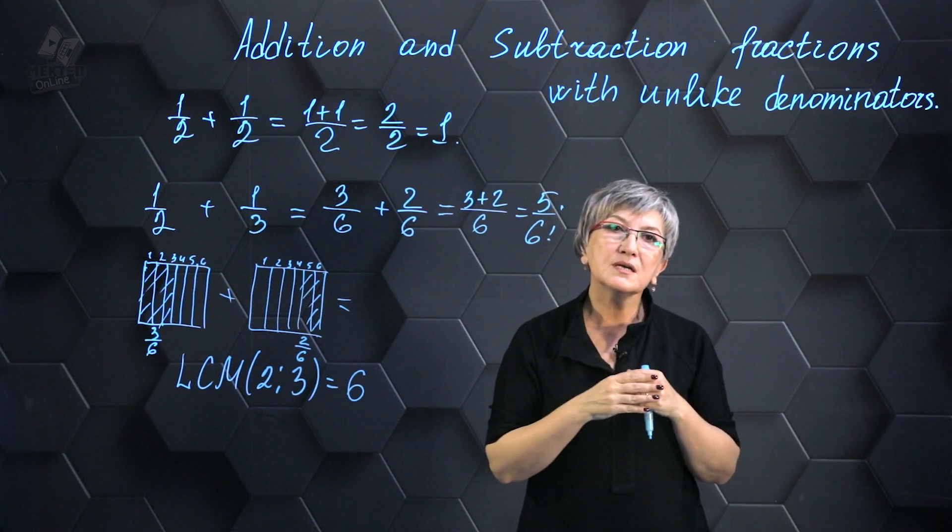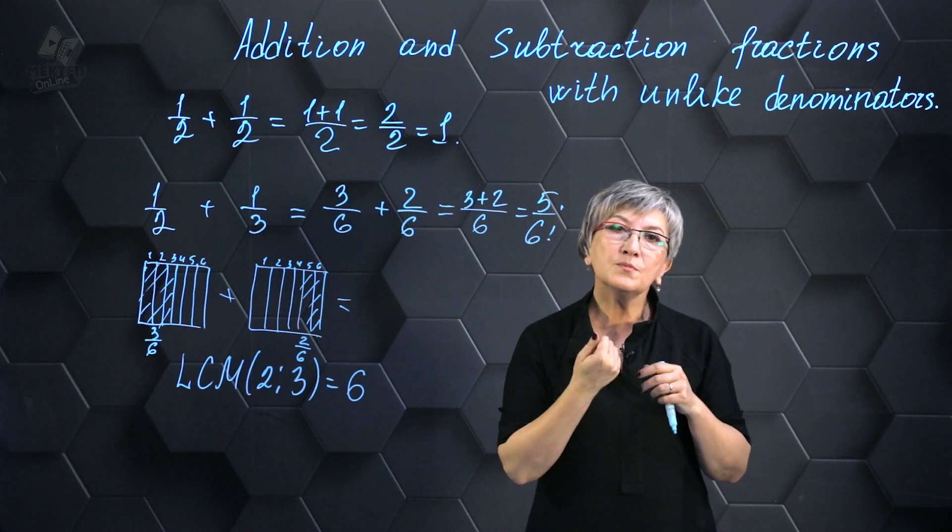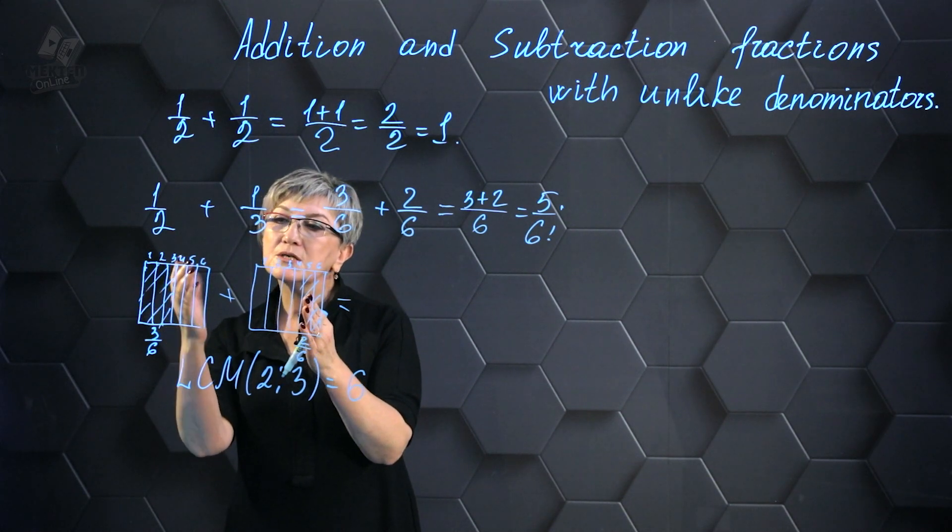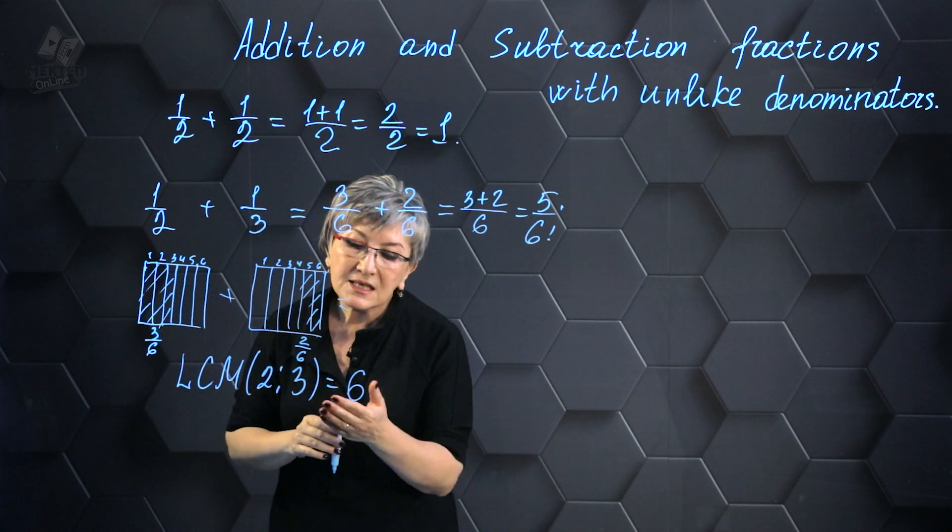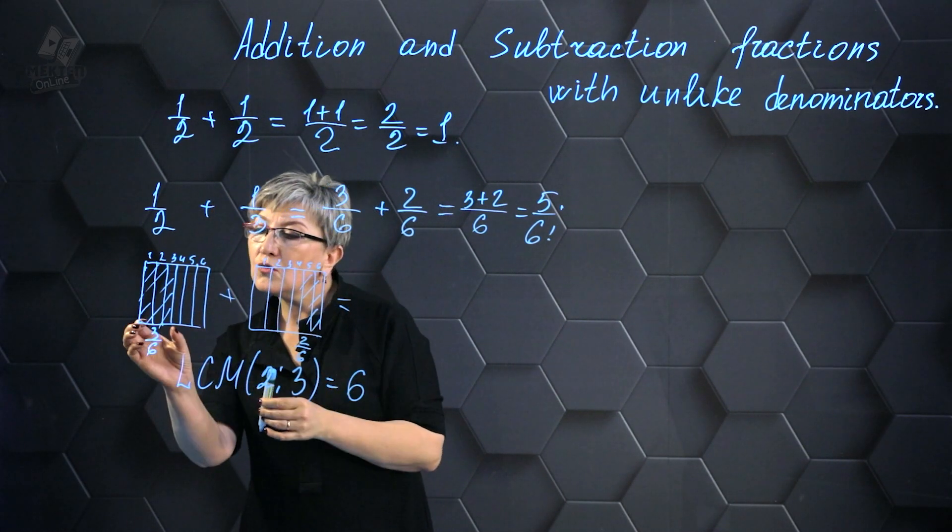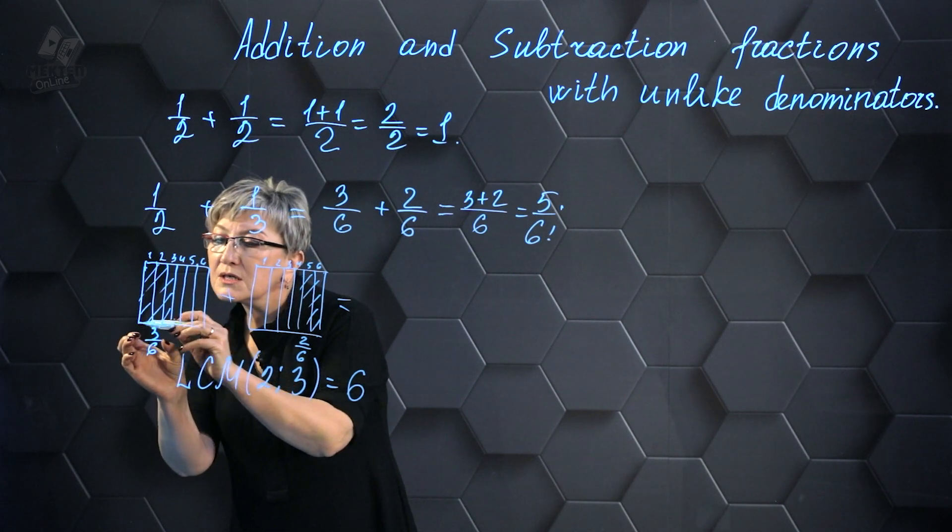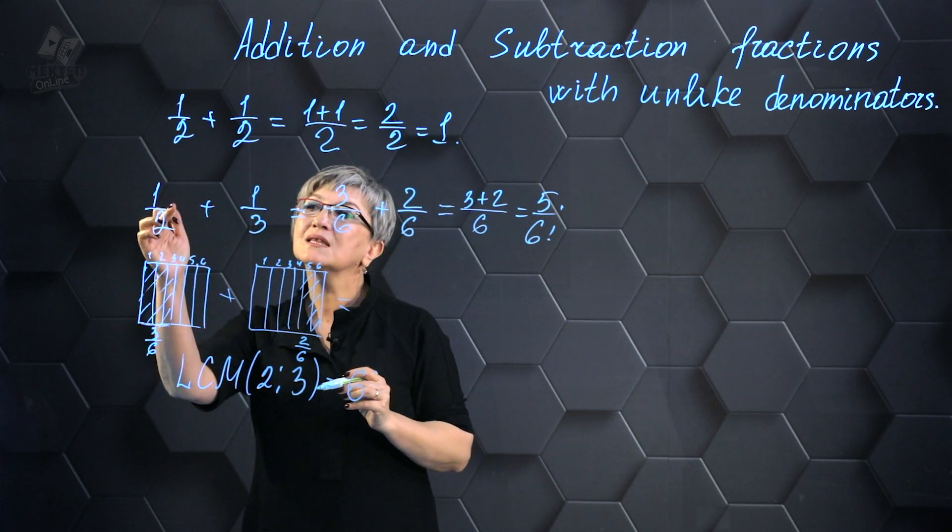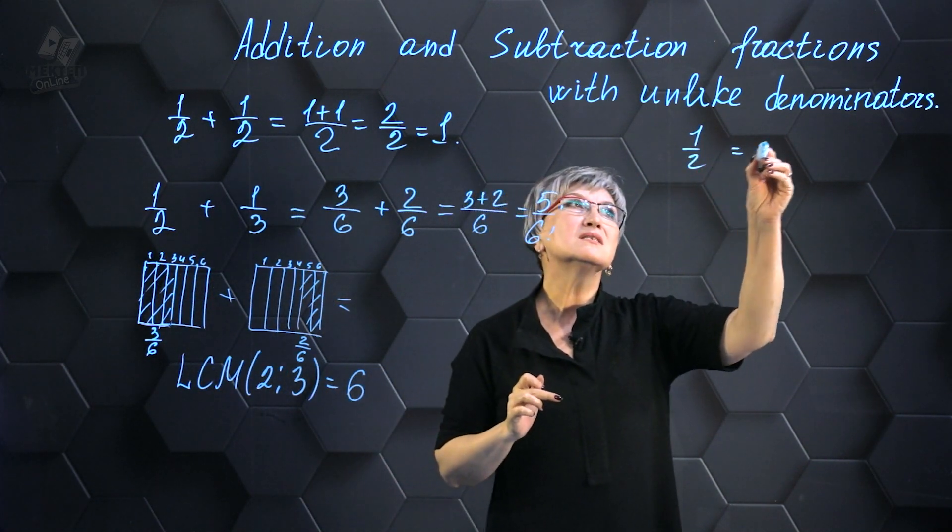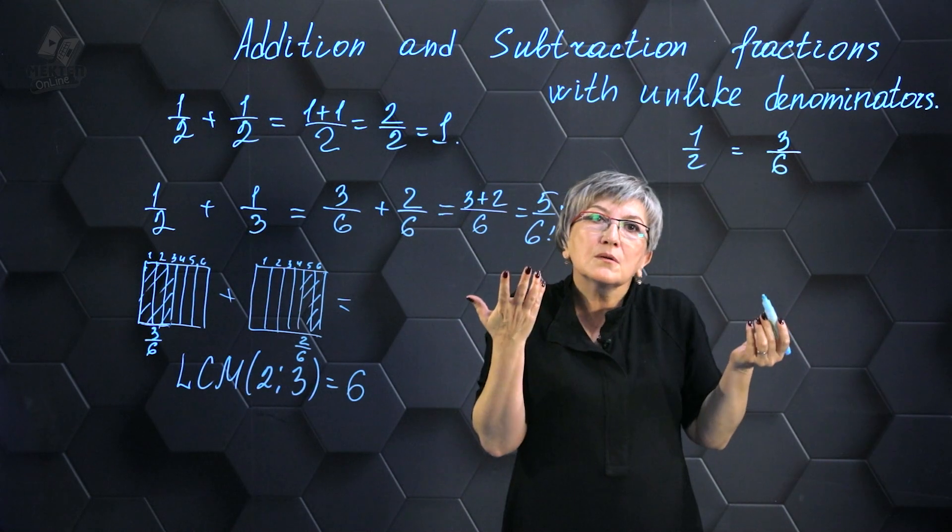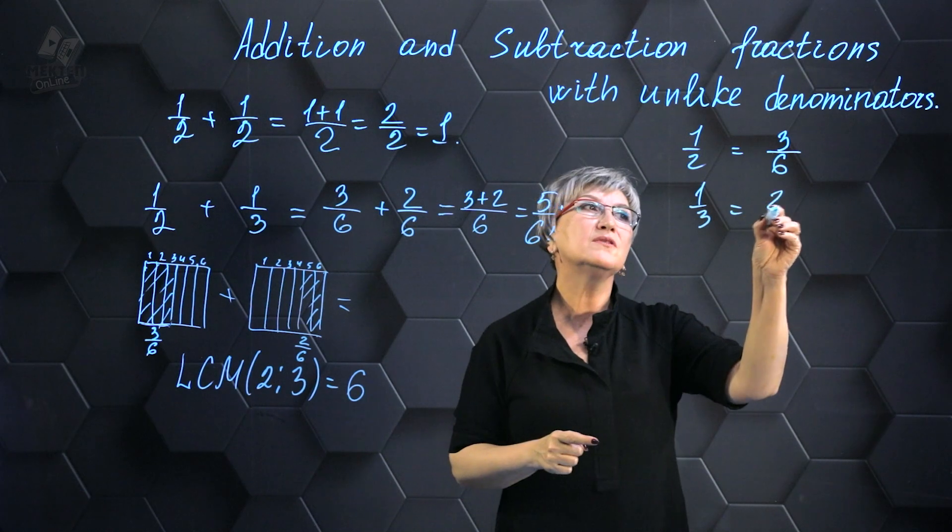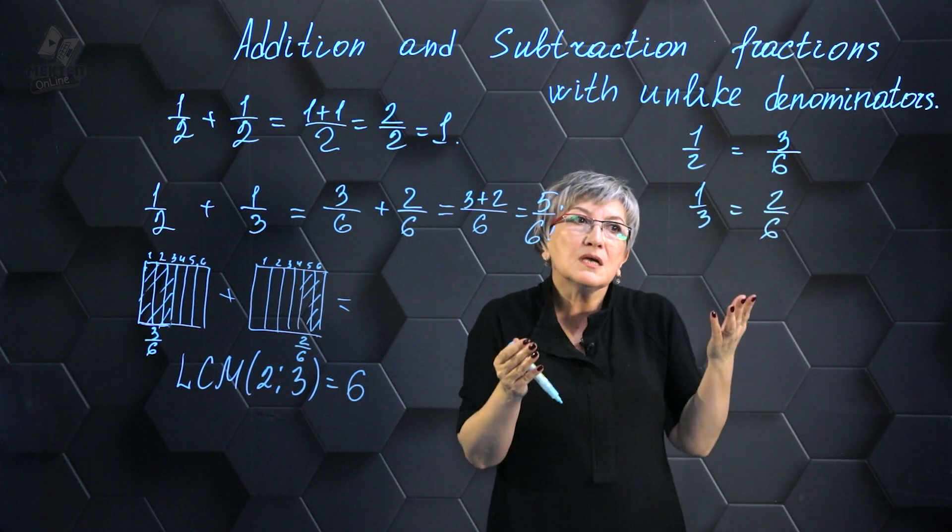So I combined these two fractions together. However, what was the problem that I encountered? I had two parts here but three parts here. I found a number that I could divide both by so they would be the same. My 1/2 was converted into 3/6. How did that conversion take place? And my 1/3 transformed into 2/6. How did these conversions happen?